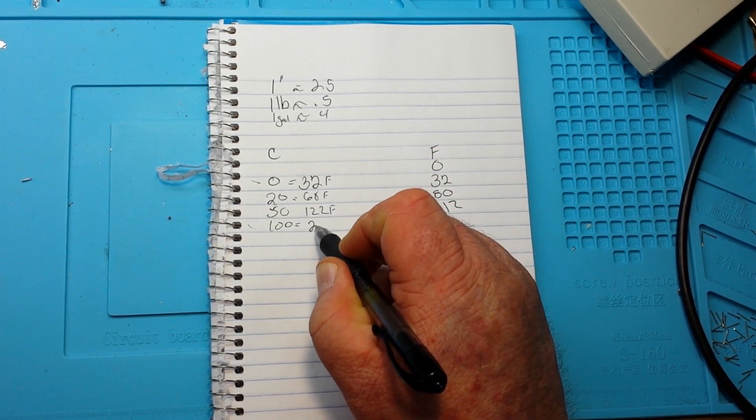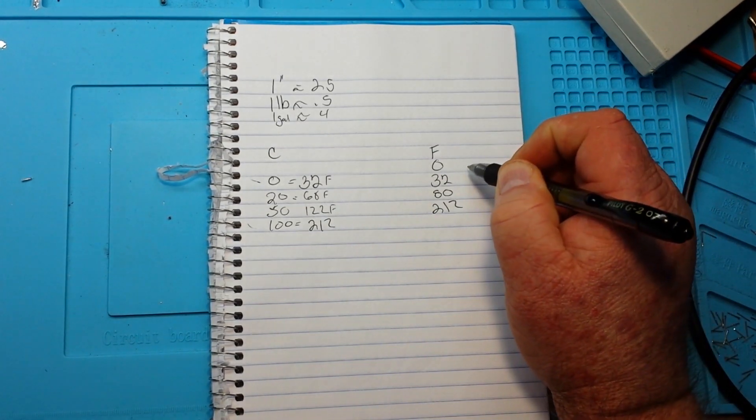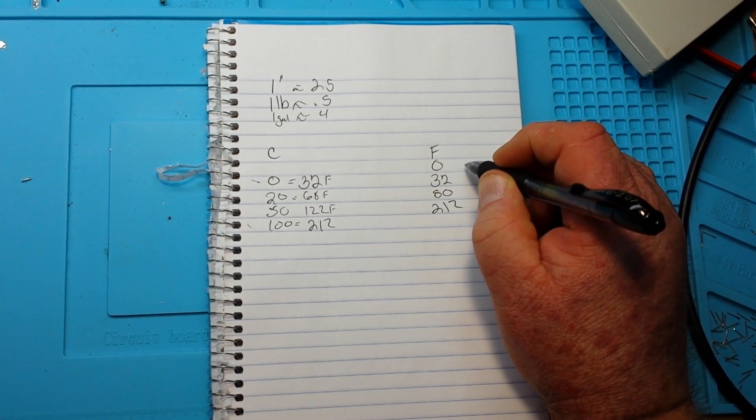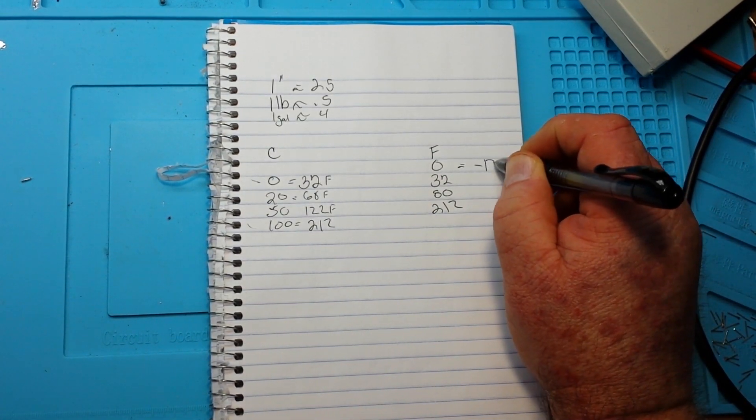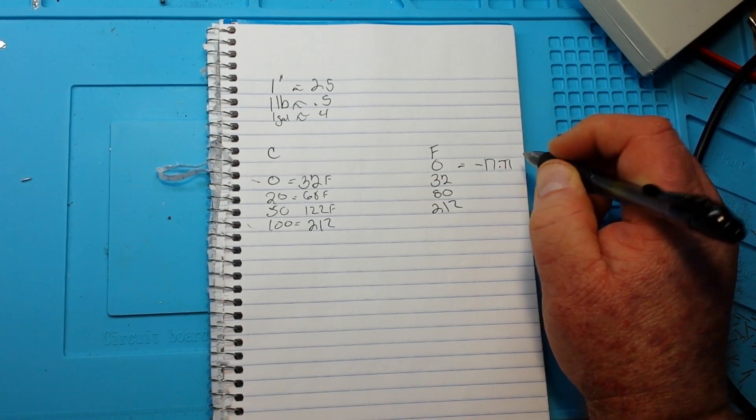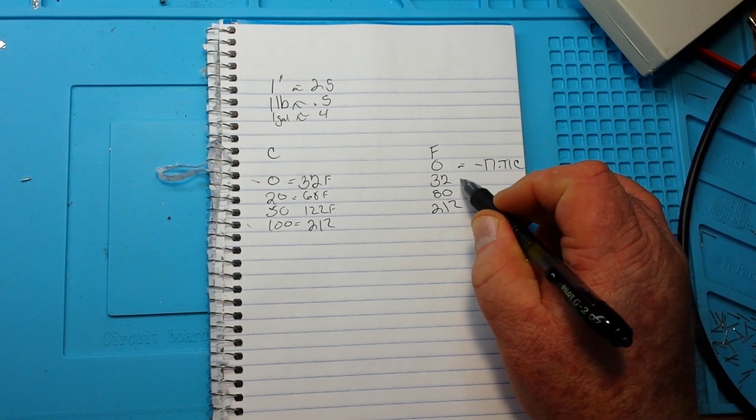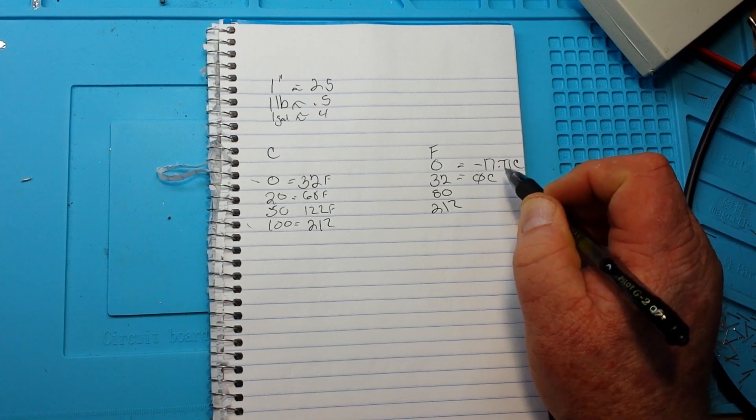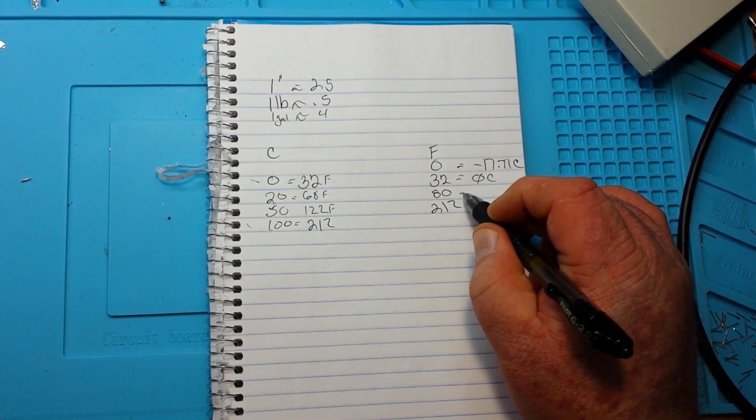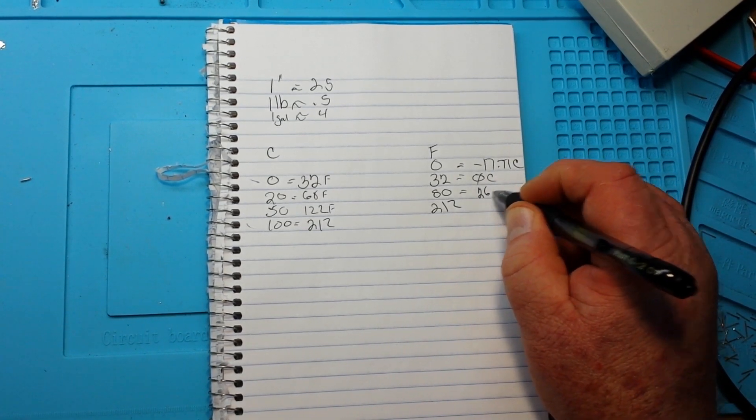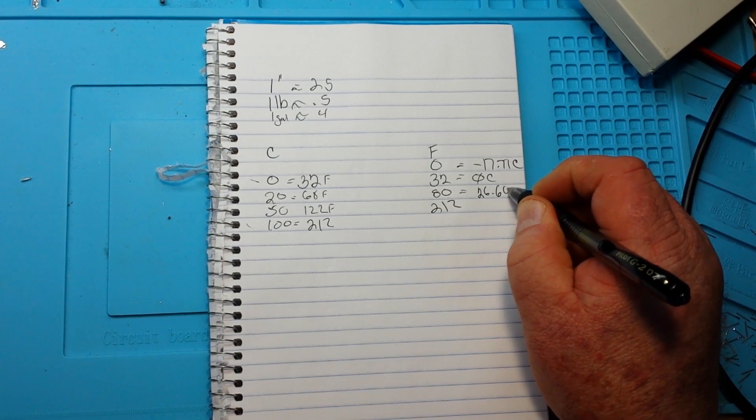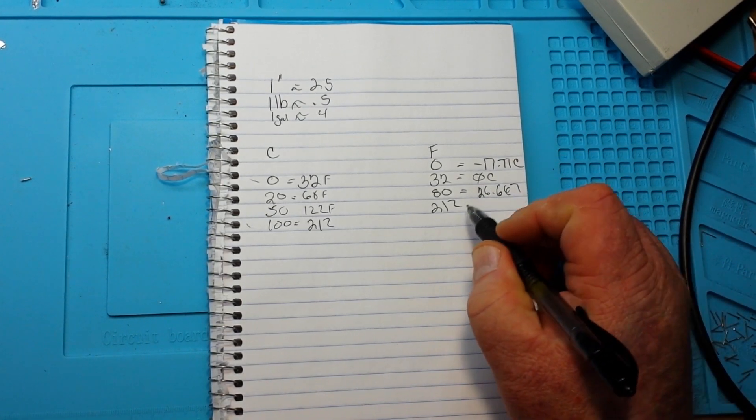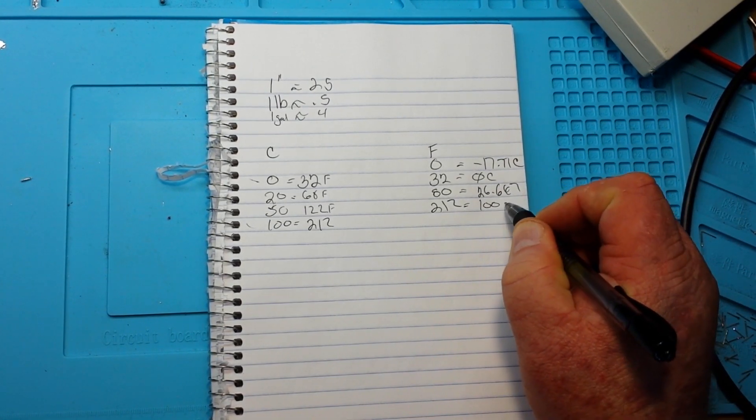So over here, zero degrees Fahrenheit is like minus 17.77 Celsius, 32 degrees Fahrenheit is zero Celsius, 80 degrees Fahrenheit is 26.667 Celsius, and 212 is 100 Celsius.